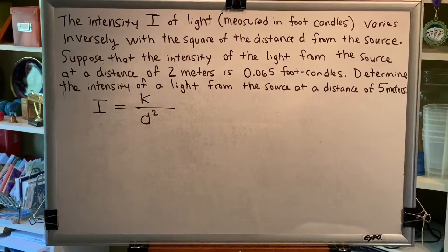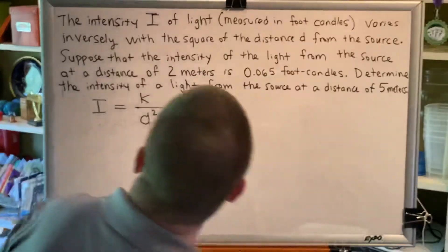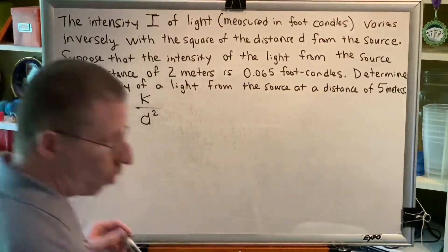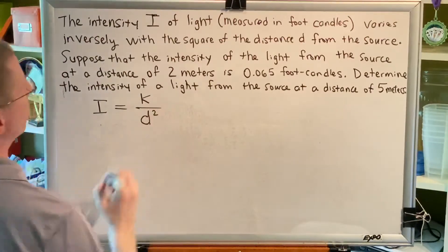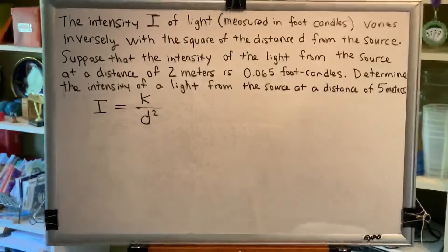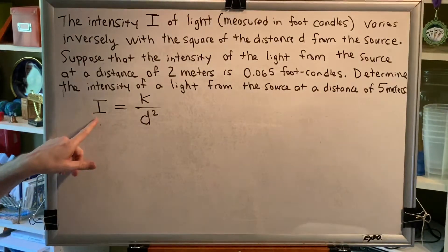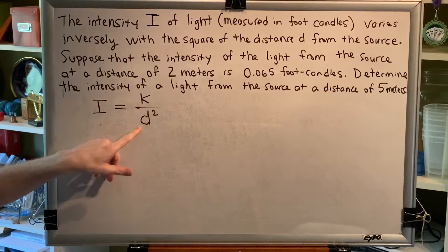Step 4, replace any empty denominator with a 1. We do not have an empty denominator for this problem. So, we get the following equation: I equals K over D squared. Said another way, the intensity of light I varies inversely with the square of the distance D.